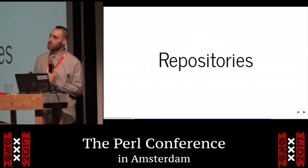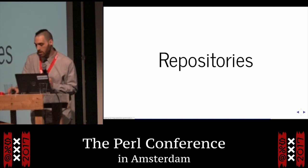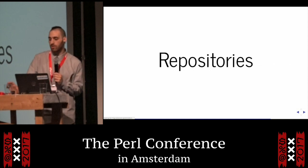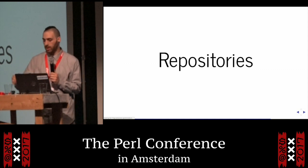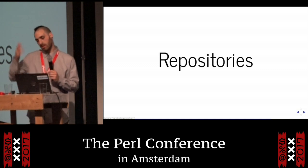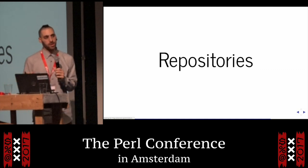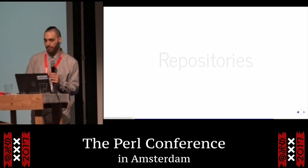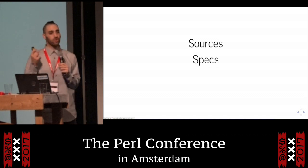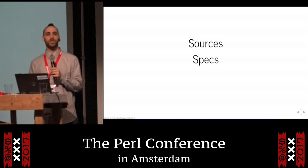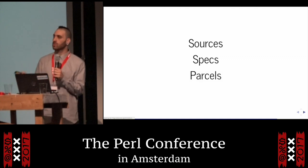There is one design decision we made early on, influenced a lot by a colleague of mine, Gonzalo Diethan, who wrote HTTP::Headers and HTTP::Cookies and other things. We came up with something called repositories. We have three different things we want to store: first, the sources — the actual files you want to build; then, the specs — the configuration on how to build them; and then the generated output — the artifacts, which are the parcels.